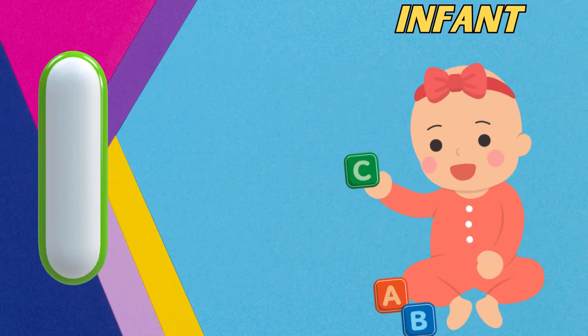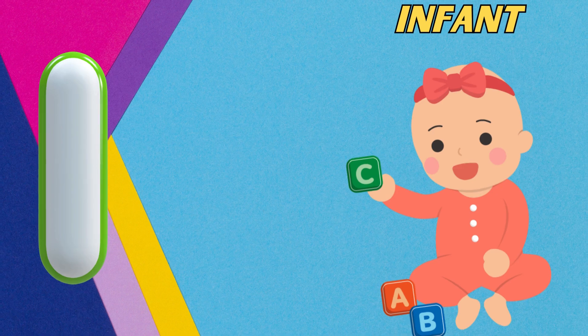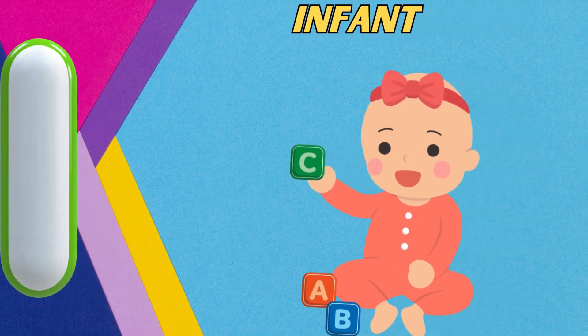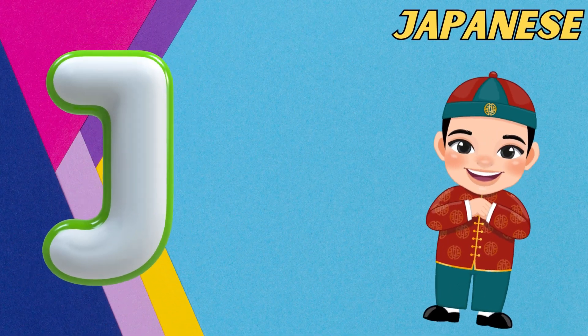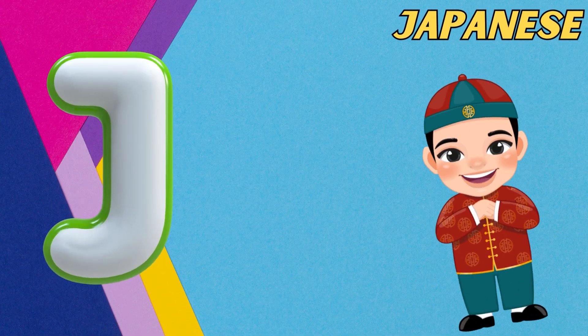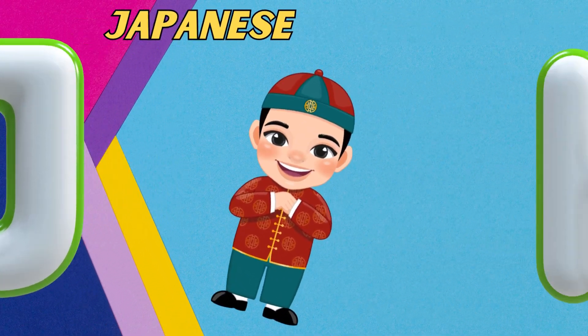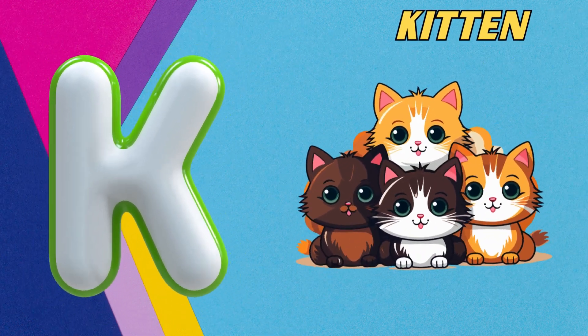I is for infant, i-i-infant. J is for Japanese, j-j-Japanese. K is for kitten,